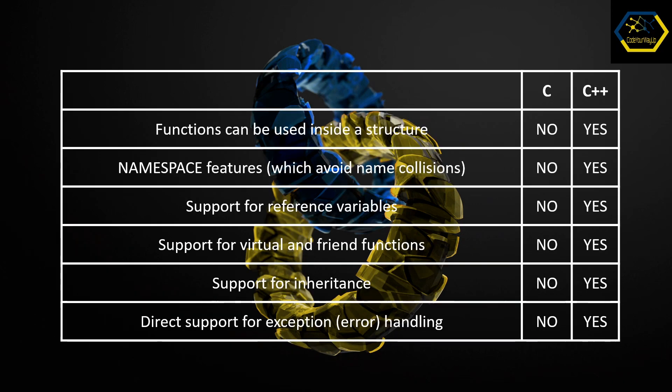You can see a table of some functionalities that C++ has and C doesn't. Functions can be used inside a structure in C++ but not in C. Namespace features, which avoid name collisions, are available in C++ and not in C. Support for inheritance, reference variables, virtual and friend functions, and direct support for exception handling — also called error handling — are all present in C++ and not in C.